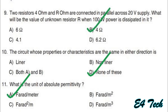According to Coulomb's law, the force between two charges Q1 and Q2 at a distance R meter in vacuum: F = k × Q1 × Q2 / R², where k is Coulomb's constant equal to 8.987 × 10⁹. Therefore, F = 9 × 10⁹ × Q1 × Q2 / d². Option A.